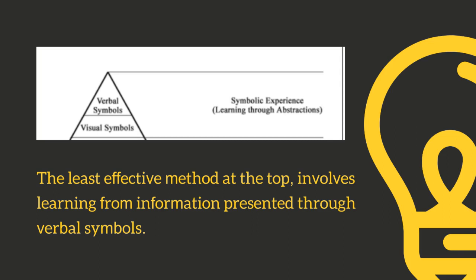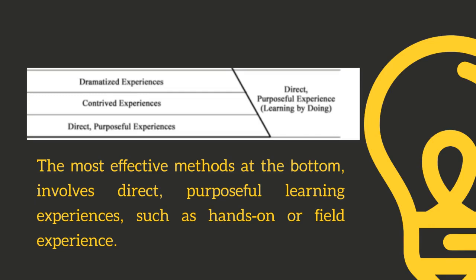The bottom of the cone represents purposeful experience that is seen, handled, tasted, touched, felt, and smelled (Dale, 1954, p. 42). By contrast, at the top of the cone, verbal symbols — i.e., words and messages — are highly abstract. They do not have physical resemblance to the objects or ideas. As Dale (1969) wrote, the word 'horse' as we write it does not look like a horse or sound like a horse or feel like a horse (p. 127). The most effective methods at the bottom involve direct, purposeful learning experiences, such as hands-on or field experience.